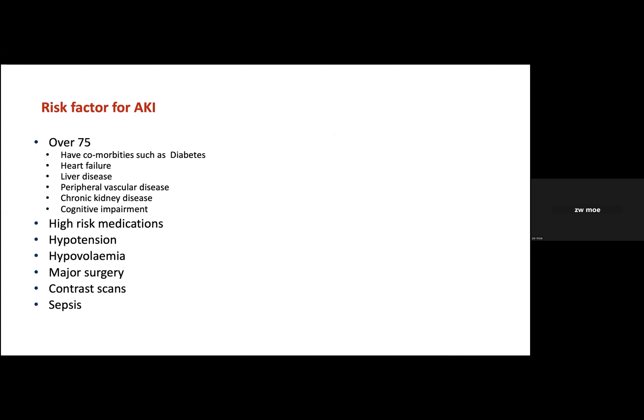Risk factors for acute kidney injury depend on the patient's pre-morbidities and other conditions. Elderly patients with co-morbidities such as diabetes, heart failure, liver failure, and existing chronic kidney disease are at high risk. High-risk medications were mentioned in the previous slide. When asking about medications, don't only ask about nephrotoxic drugs — ask about all regular medications, as some need to be held or dose-adjusted during AKI. Also ask about new medications, hypovolemia or hypertension, any contrast scans, or any source of infection.